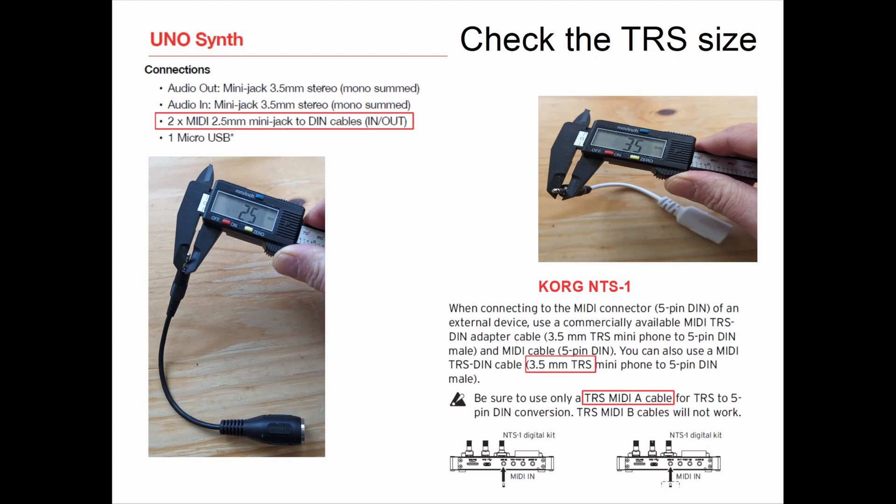Not only is it a Type A and Type B, but you also need to keep in mind the size of the TRS, because you commonly see a 3.5mm, but there also exist 2.5mm and 2.5-inch TRS adapters to 5-pin DIN MIDI.